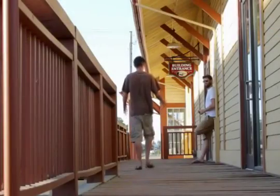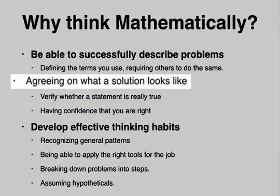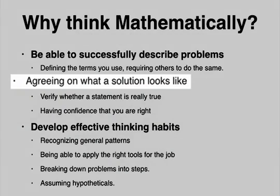Once you agree on that meaning, then you can walk together and arrive at a solution that you can both agree on. So math helps you to agree on a solution — if you have a problem, you describe it, and after a while you're like, okay, this seems to solve it. You can actually agree on the solution, which is pretty useful in real life.